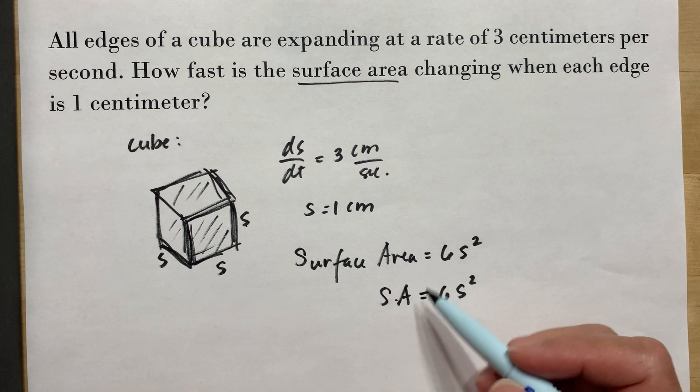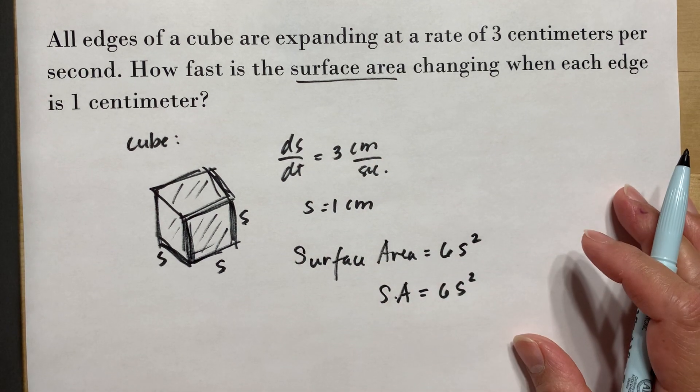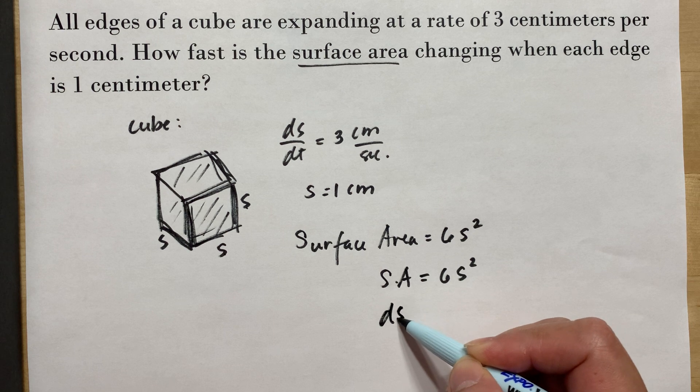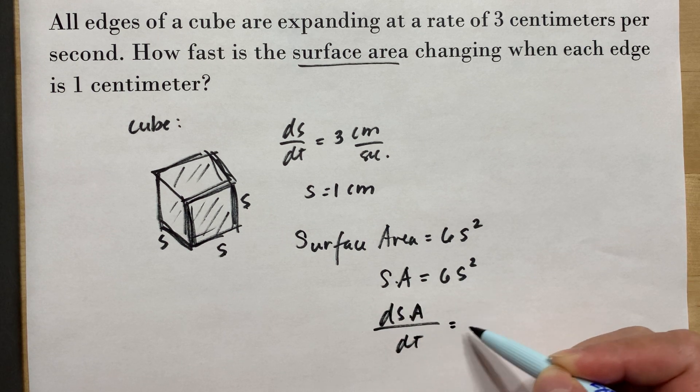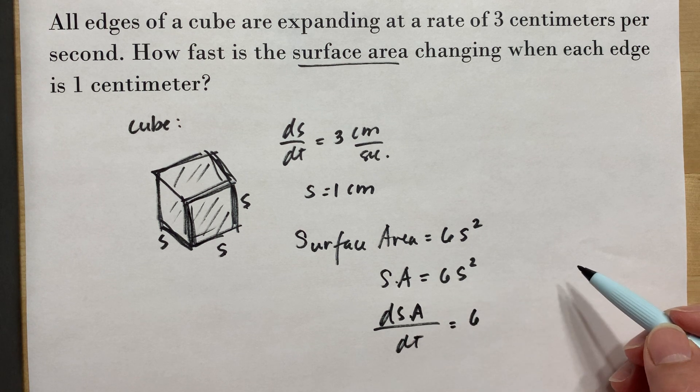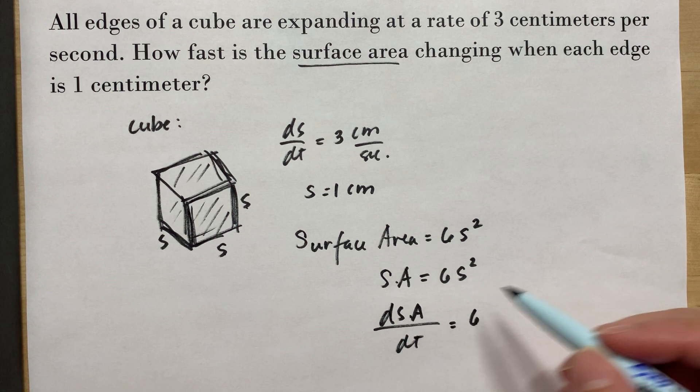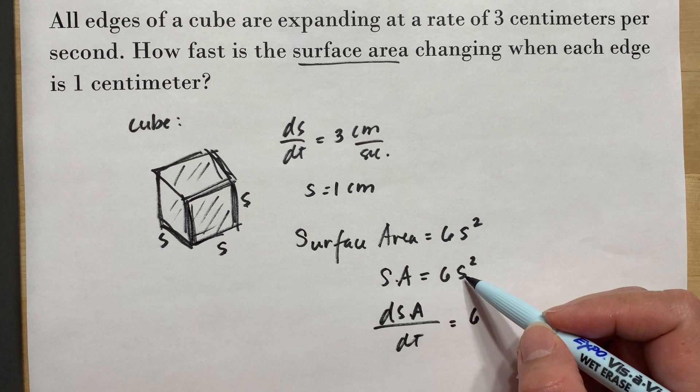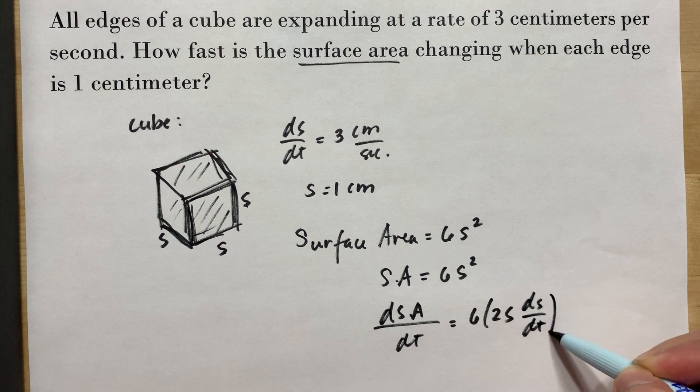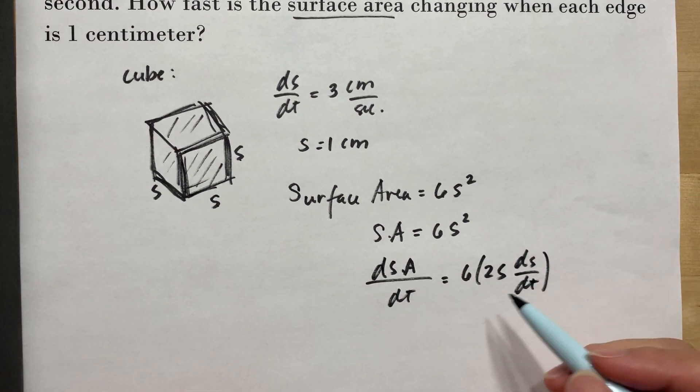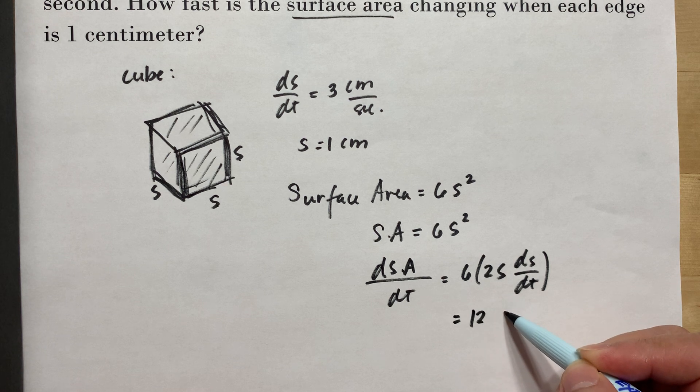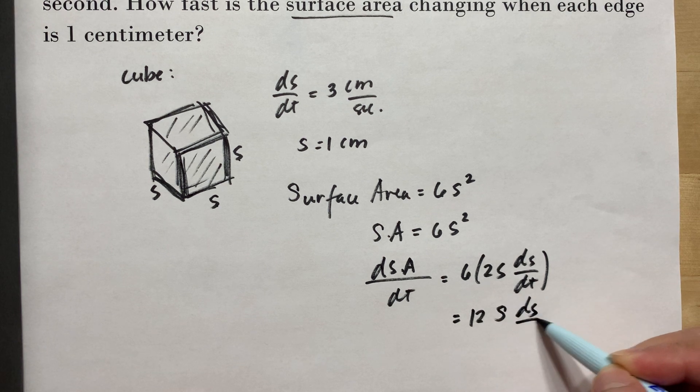And to get the rate of change of the surface area, we need to get the derivative. The derivative of the surface area with respect to time will be 6, since the side is expanding. Meaning we'll get the derivative of the side, which is 2S dS over dt. Now, to simplify this, this is 12 multiplied by S dS over dt.